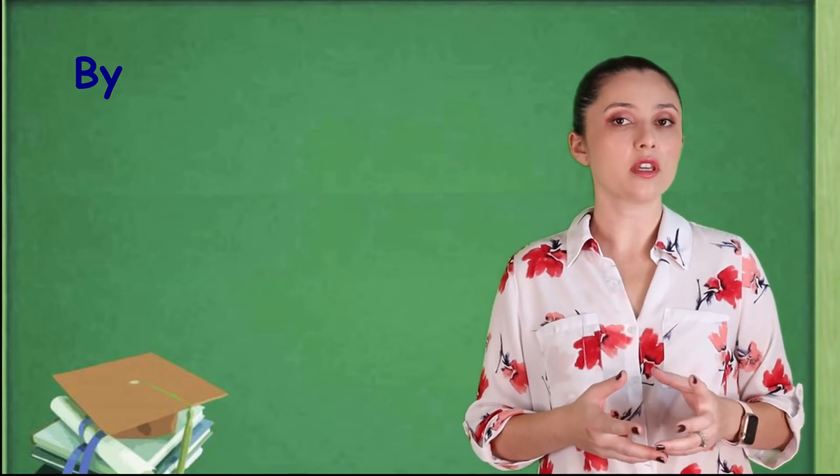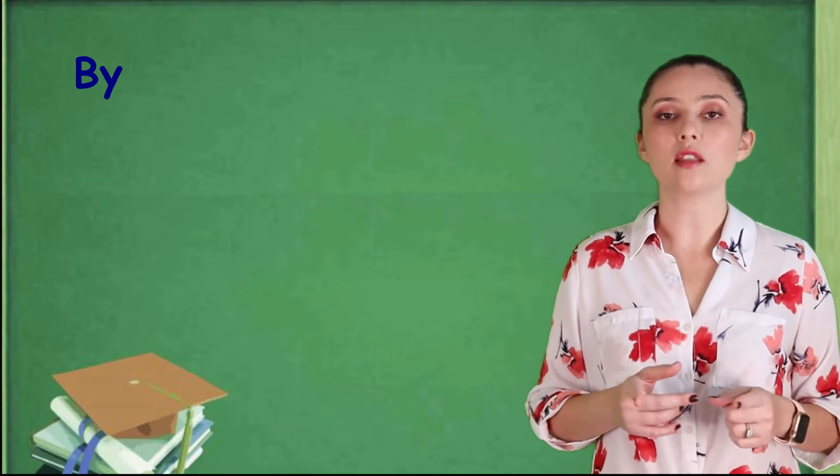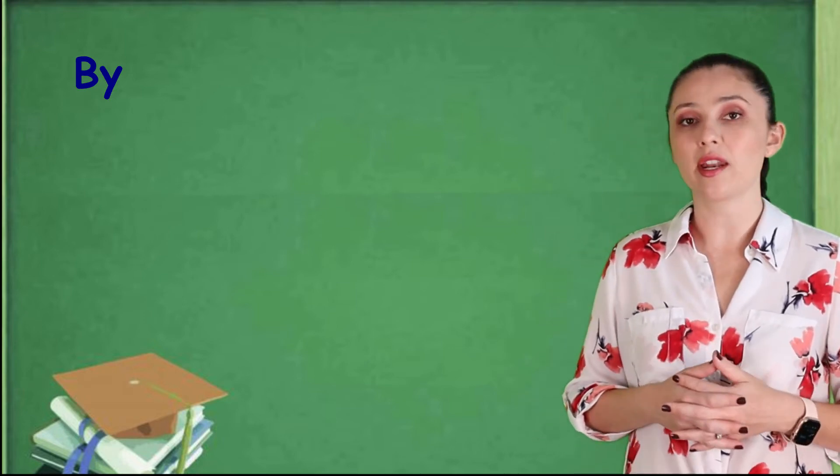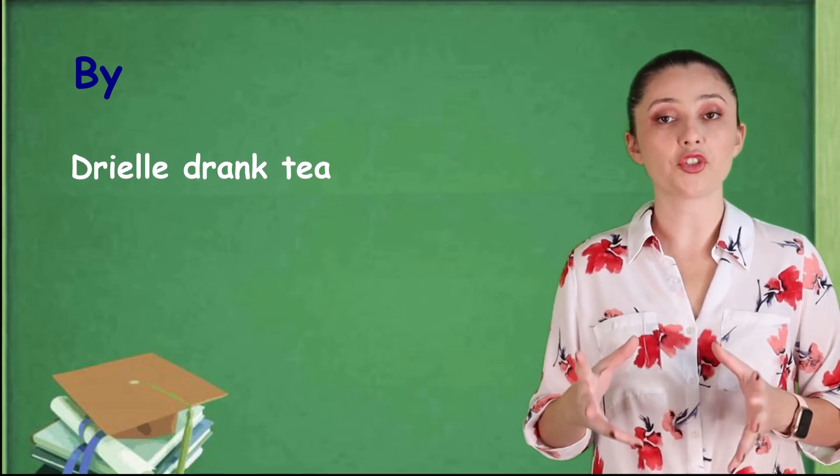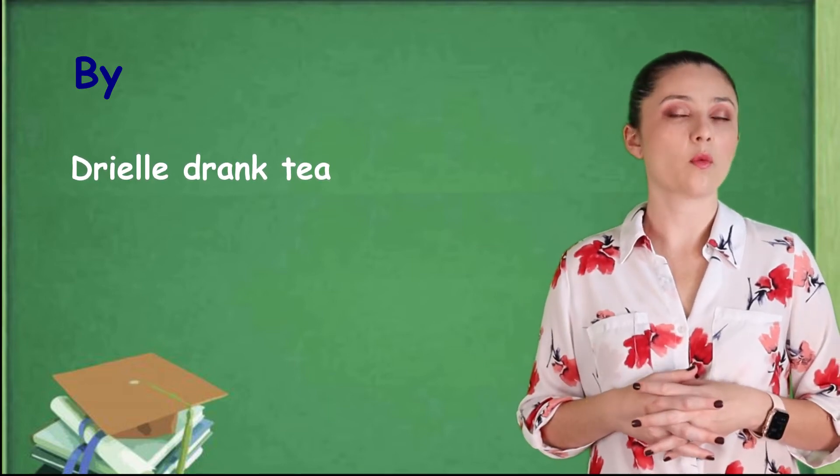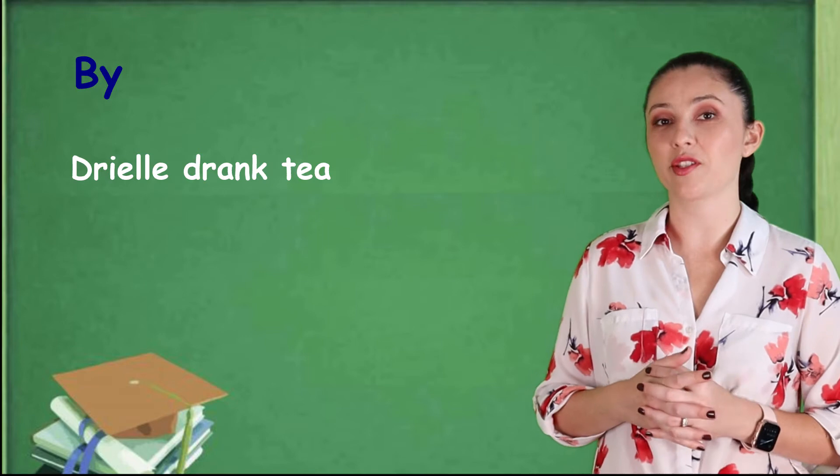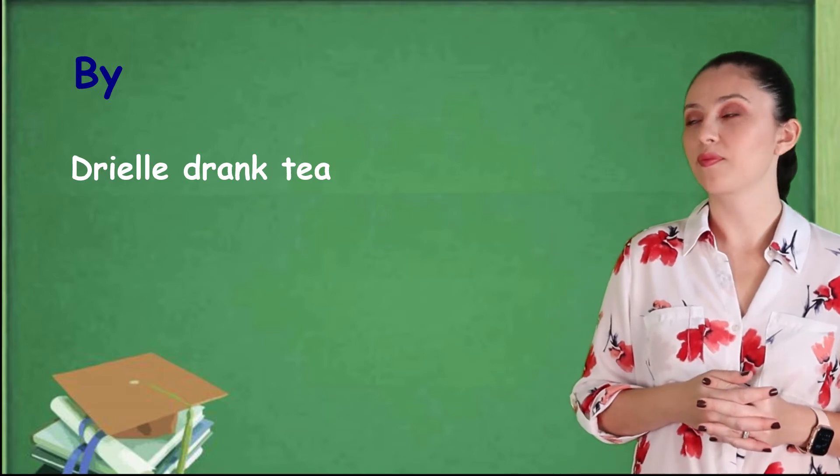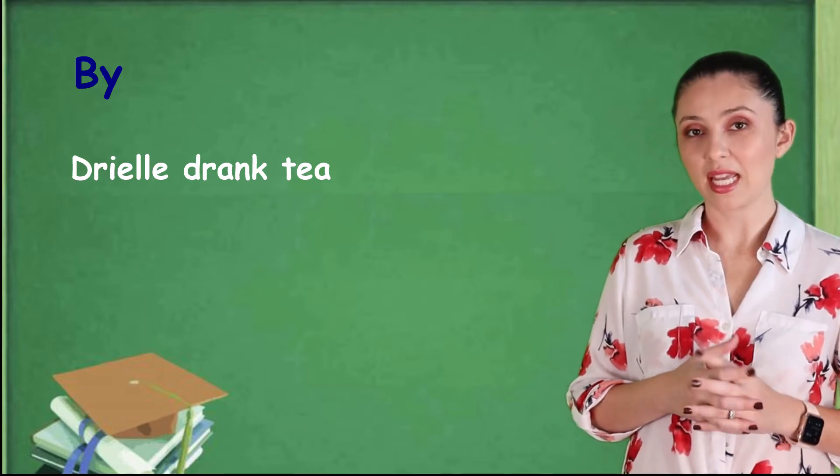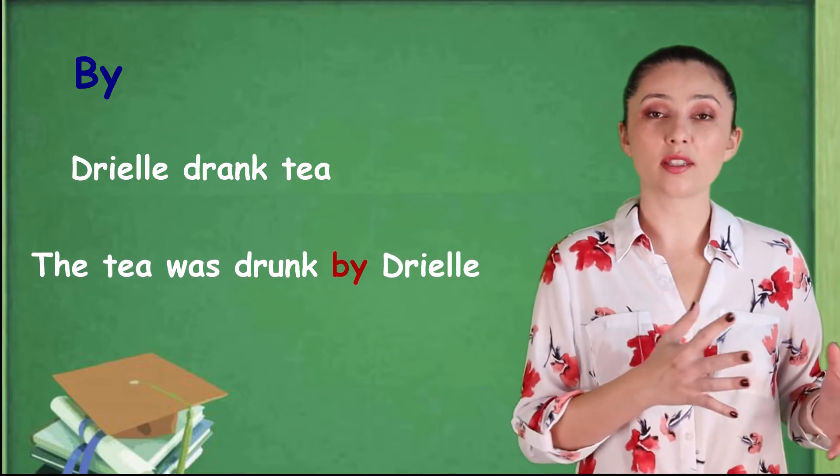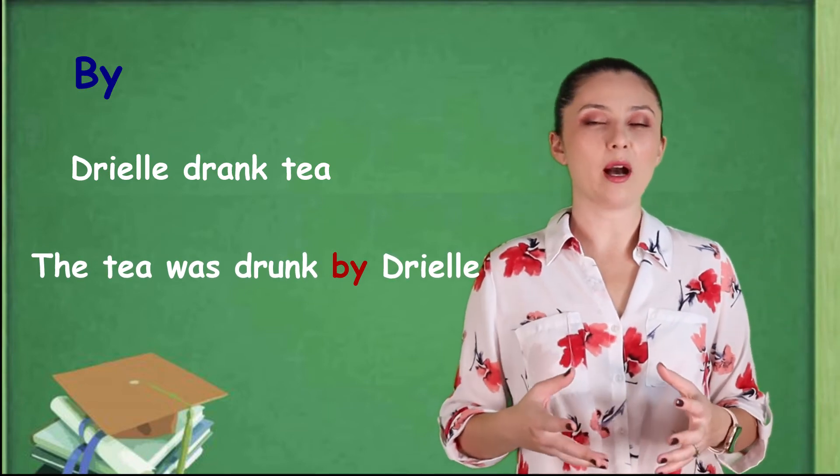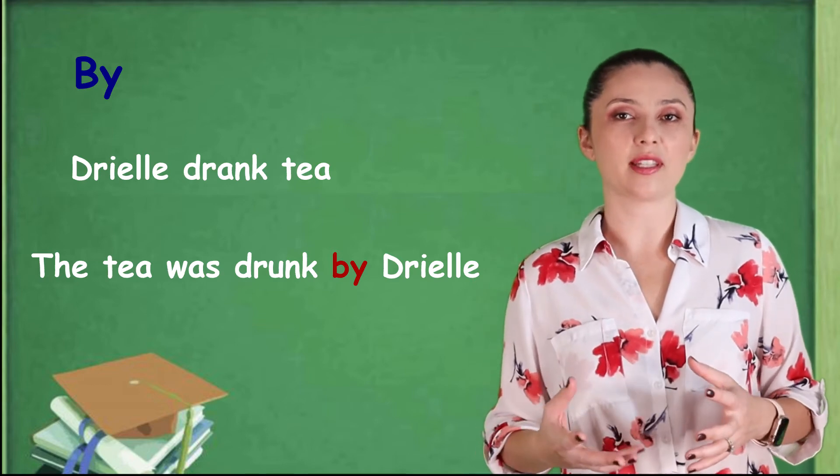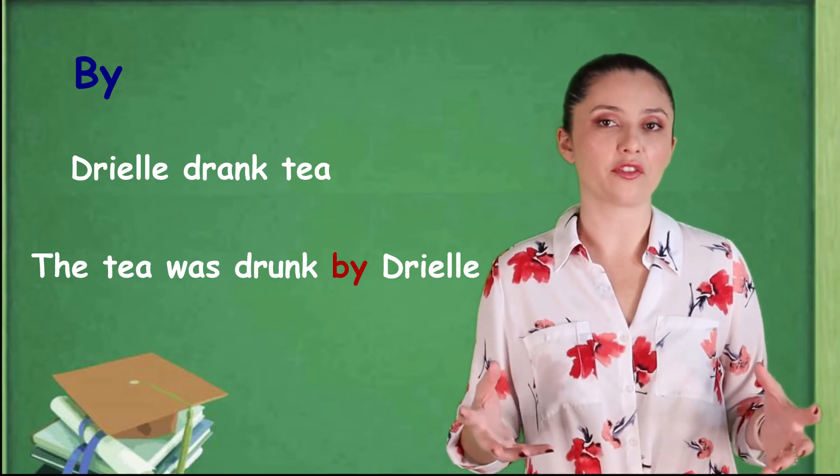Now, if you think you got it, I'm going to give you another example and try to see if you get it right. So, Drielli drank tea. Drielli drank tea. What is the passive voice of this phrase? So, the tea was drunk by Drielli. And to know more about passive voice, you gotta understand and know verbs and all their verb tenses.